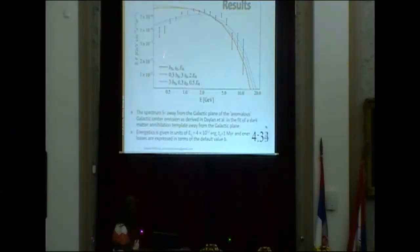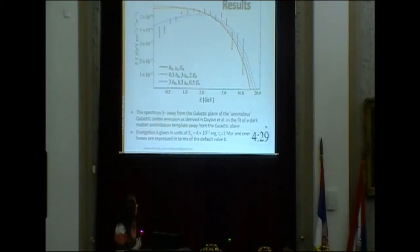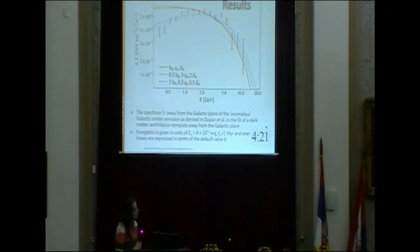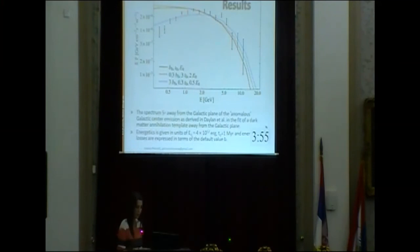The biggest differences can be seen at lower energies. We explain these differences because the error bars are purely statistical and do not include any systematics. It is important to say that at low energies Fermi-LAT loses its resolution a lot — it becomes basically blind below 0.5 GeV. This might be why there are such big differences between our results and what Dalen and his collaborators got for their best fit of the dark matter annihilation template.